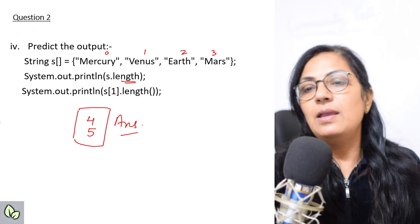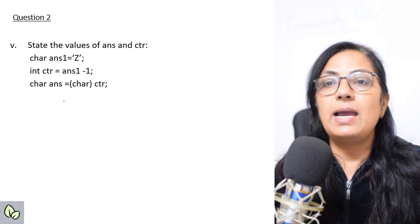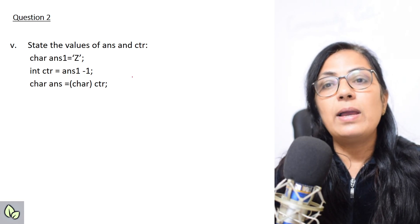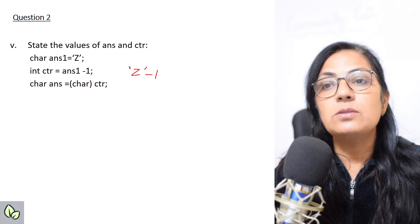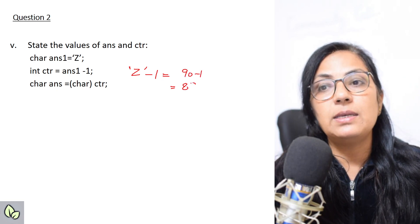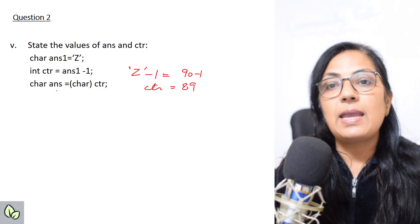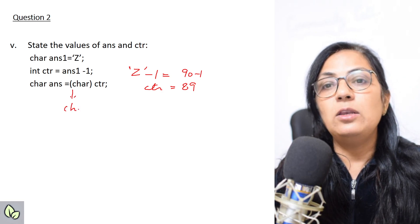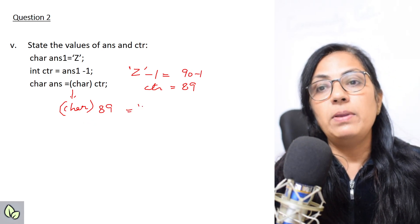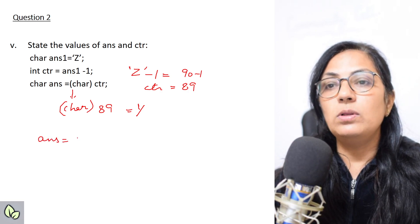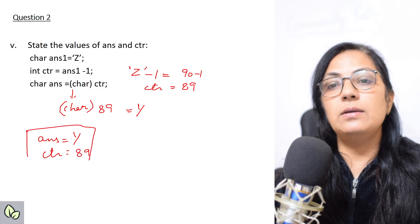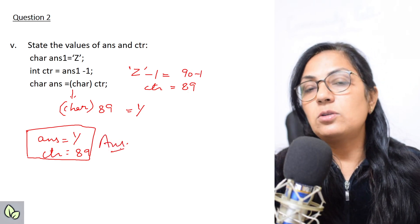Next: state the values of ans and ctr. char ans = 'Z'; int ctr = ans - 1. ASCII of 'Z' is 90, so 90 - 1 = 89; ctr = 89. Then char ans = (char) ctr: the character with ASCII value 89 is 'Y'. So ans = 'Y' and ctr = 89.